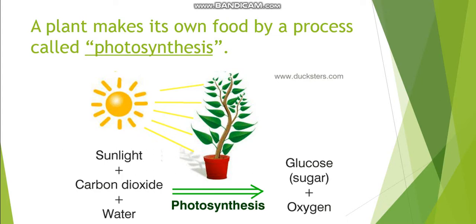Sunlight plus carbon dioxide plus water through photosynthesis are transformed into sugar and oxygen.